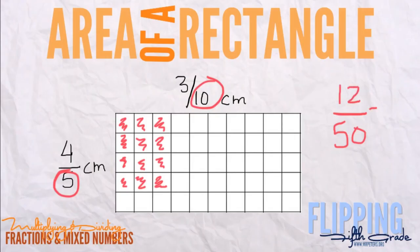So twelve-fiftieths, which can be reduced by dividing by two to give us six-twenty-fifths. And that is how you do area of a rectangle when given diagrams that look similar to this.